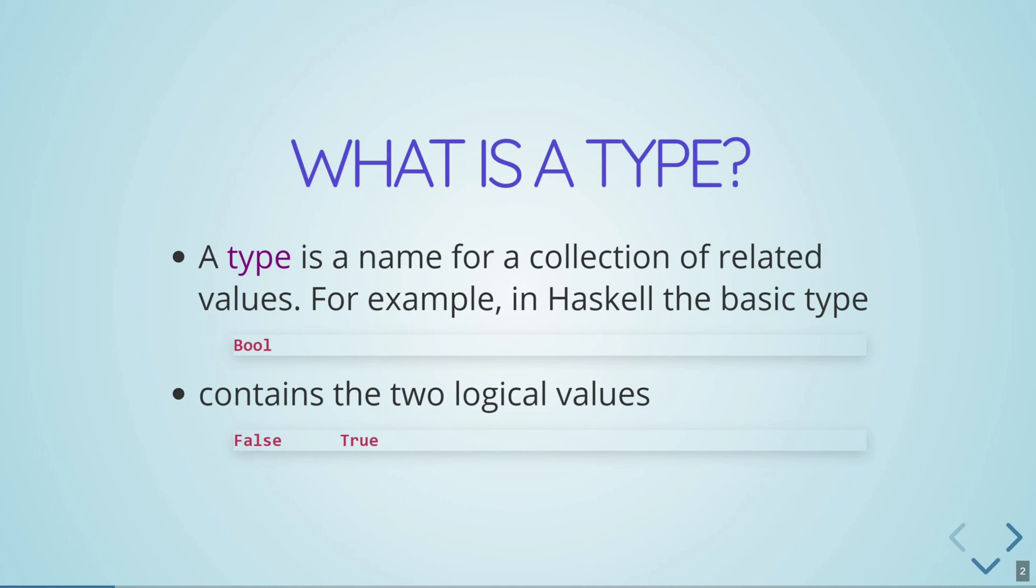A type is the name of a collection of related values. So for example, we have a type called bool that contains two logical values, false and true. Similarly, there are other types like int. Int will contain numbers, 1, 2, 3, 4. Actually, that's a collection of an infinite amount of different values.